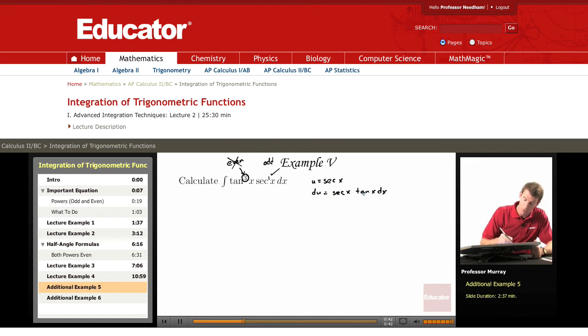And the point of that is that we can then convert this integral into something just involving secant x's. We have tangent cubed x, so we're going to write that as tangent squared x times tangent x times we still have secant x dx.